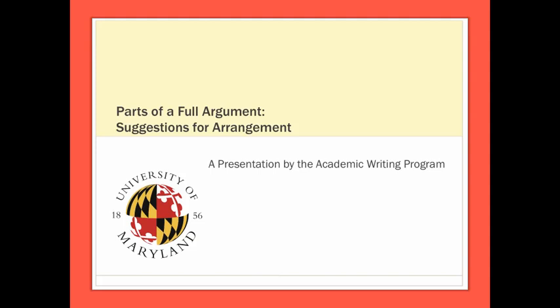Hello, and welcome to another presentation from the Academic Writing Program at the University of Maryland. I'm Linda McCree, Director of Academic Writing, and today we'll be considering what's referred to as the parts of a full argument, a method of arrangement from classical rhetorical theory. I'll review the six-part structure of a full argument, explain what each section seeks to accomplish, and consider how you might use this structure as a guideline for a fully developed argument paper.